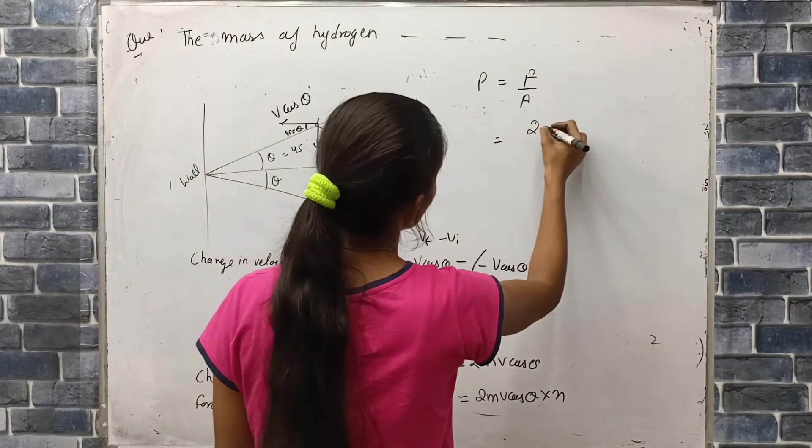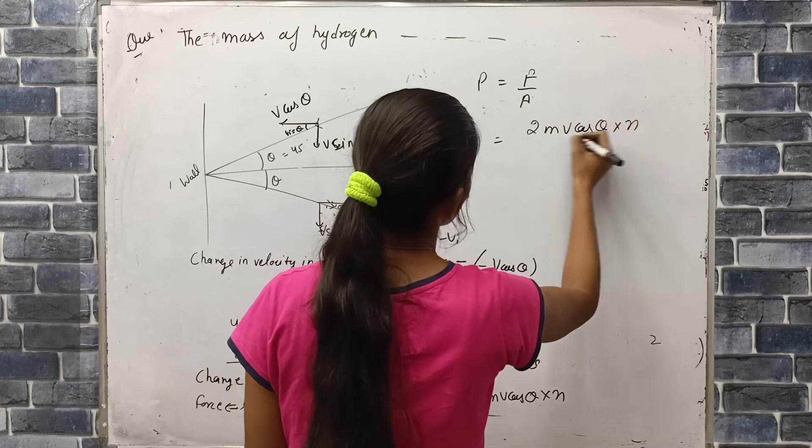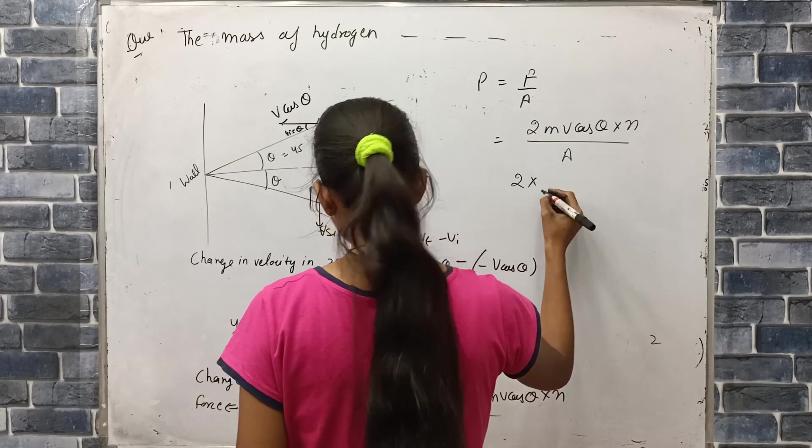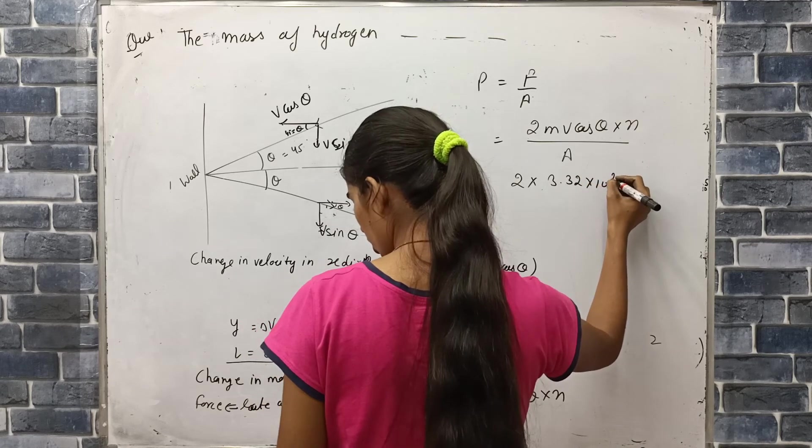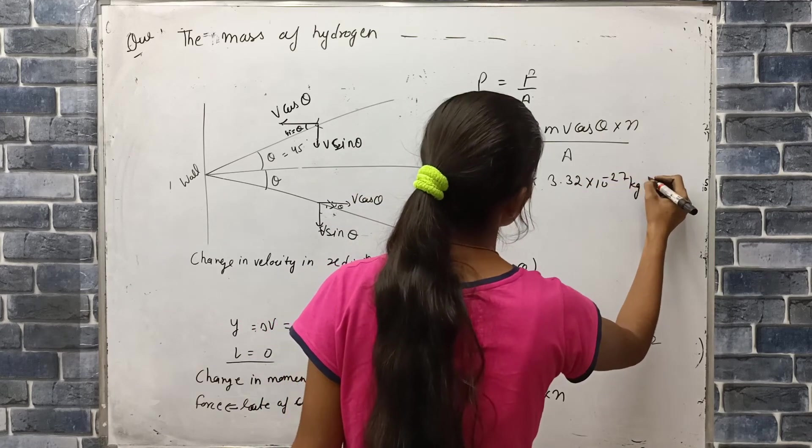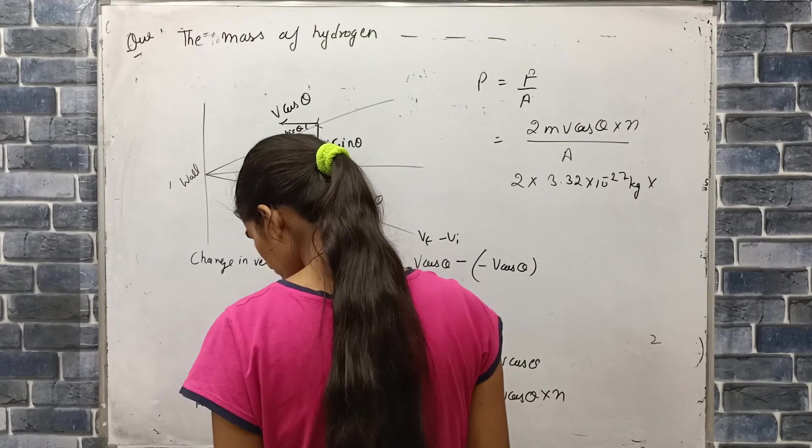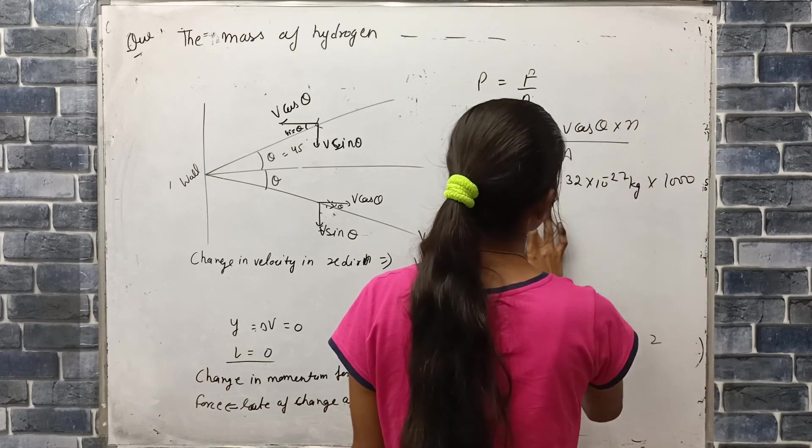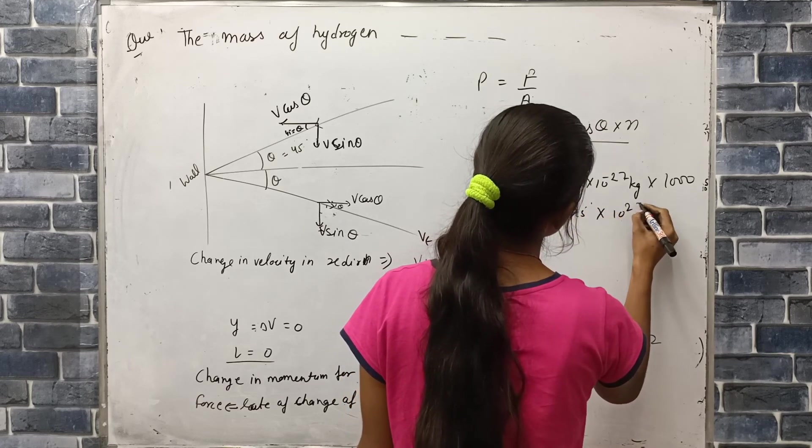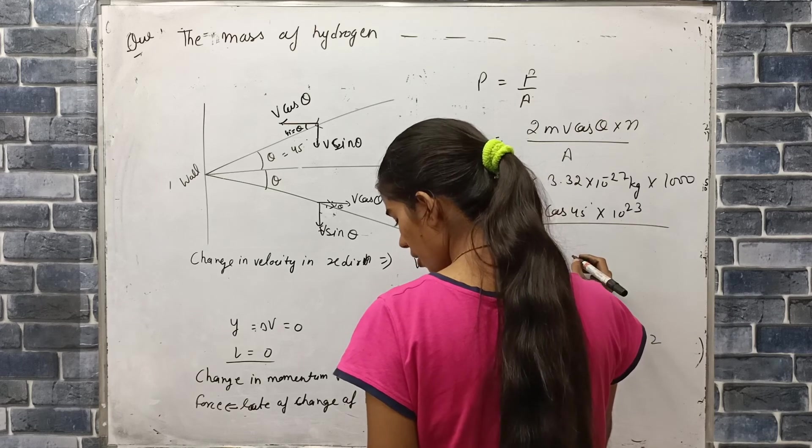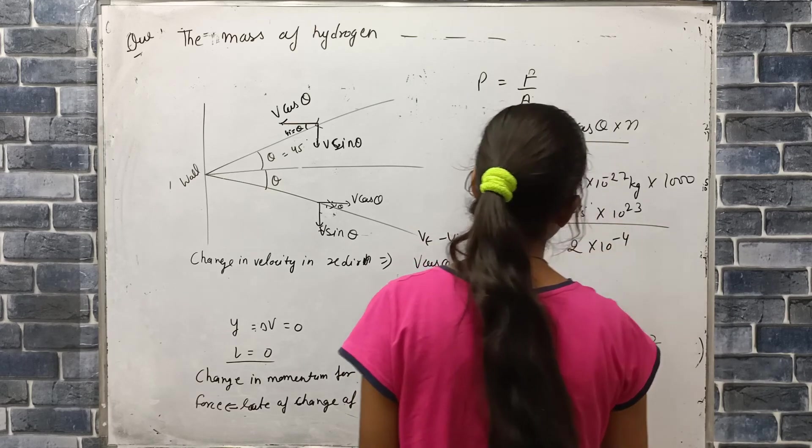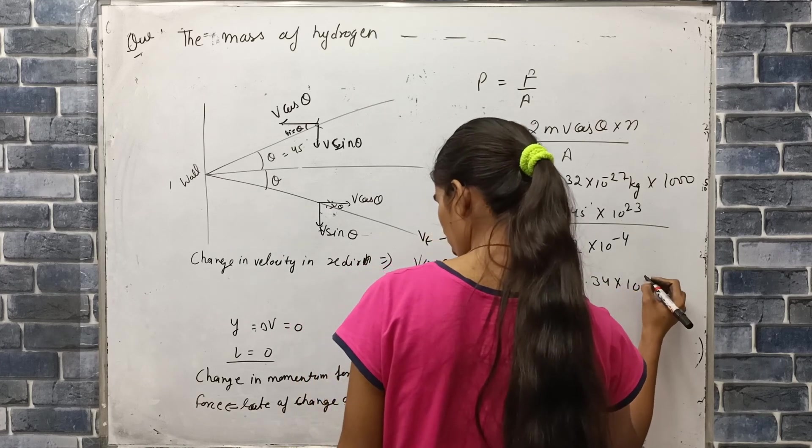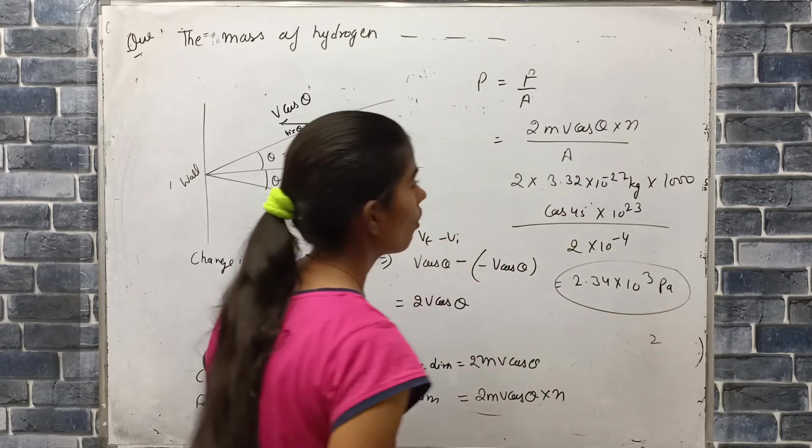Force upon area. Force is 2mV cos theta into n divided by area. So 2 into mass 3.32 into 10 to the power minus 27 kg, into velocity 1000 meter per second, into cos theta, cos 45 degree, into 10 to the power 23, divided by area 2 cm square, that is 2 into 10 to the power minus 4. When we solve this, the answer is 2.34 into 10 to the power 3 Pascal. This much pressure.